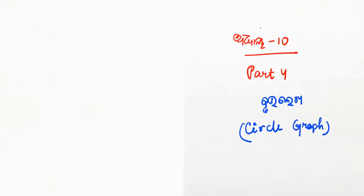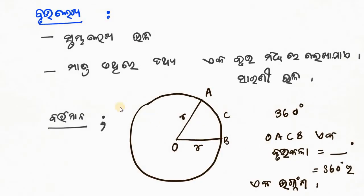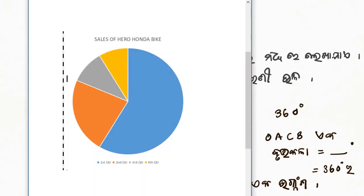A pie chart is a type of chart. I will show you the details of the sales of the Honda bike.